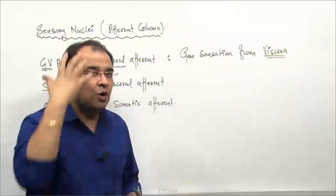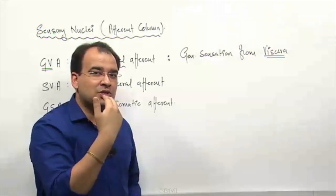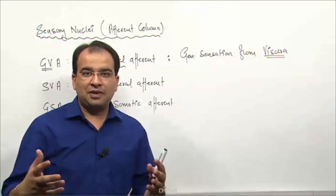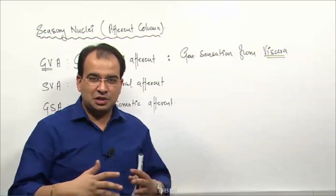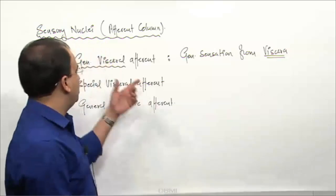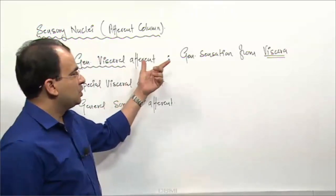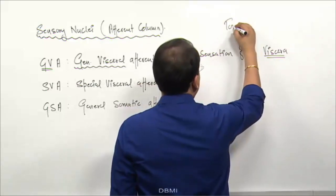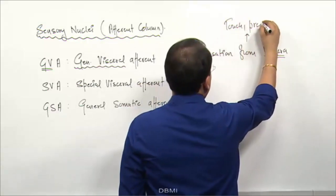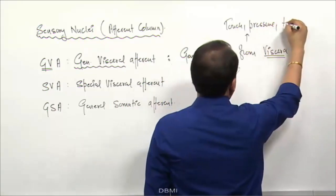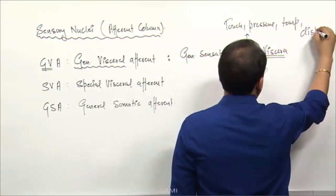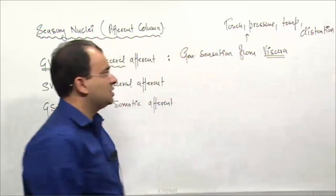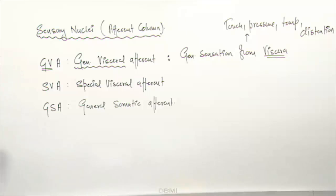You can have general sensation from outside, from the body wall, but here we are talking about the general sensation from the viscera - from the tongue, from the esophagus, from the stomach. Even distension of the stomach is a general sensation and will go into the GVA column. So general sensation from the viscera includes touch, pressure, temperature, distension, and many others - all are general sensations and they go into the GVA column.